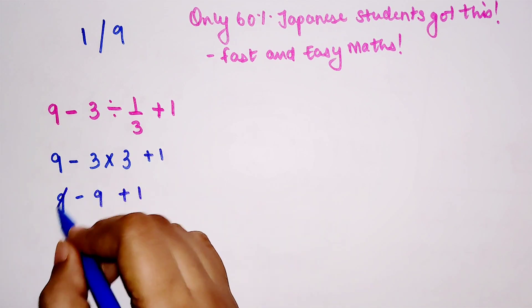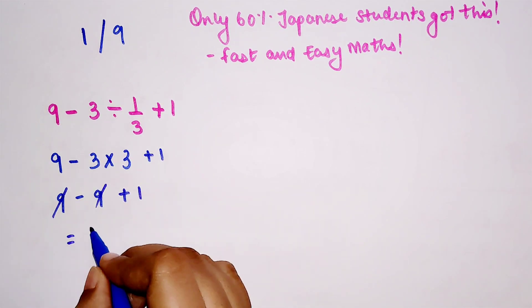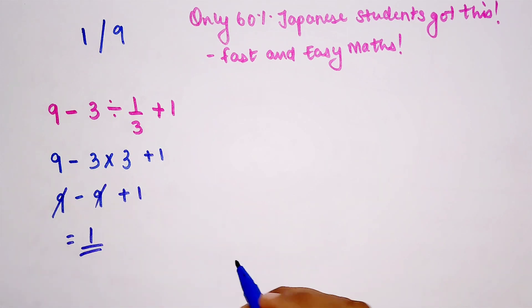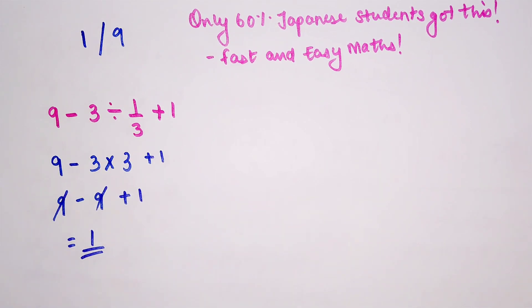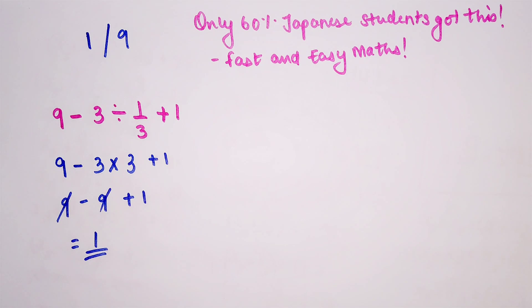According to BODMAS, this is 9 minus 9 plus 1, so this and this will cancel, so my final answer is 1. This is how we've been taught through school and this is absolutely correct, so don't panic if you got this answer.